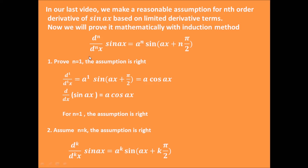First, we should prove this assumption is right when n equals 1. So when n equals 1, this assumption becomes a to the power of 1 times sine of ax plus pi divided by 2, which equals a times cosine ax. This result is exactly the same as what we get by directly differentiating sine ax, which gives a cosine ax. So we prove that this assumption is right for n equals 1.